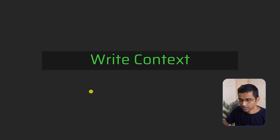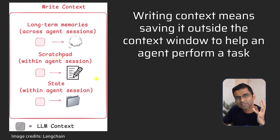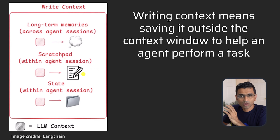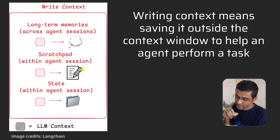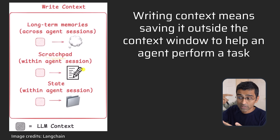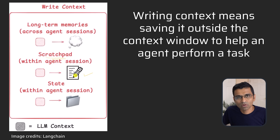The second strategy is writing the context. You can use something called a scratchpad, which you can implement with a simple tool call that writes to a file on disk. The scratchpad is separate from your LLM context window. Think of it like a human having a notepad during a conversation — you jot down points in the notepad while remembering information in your brain. The notepad is the scratchpad; remembering in the brain is your LLM context window. It's additional memory, easily implemented with a tool call.